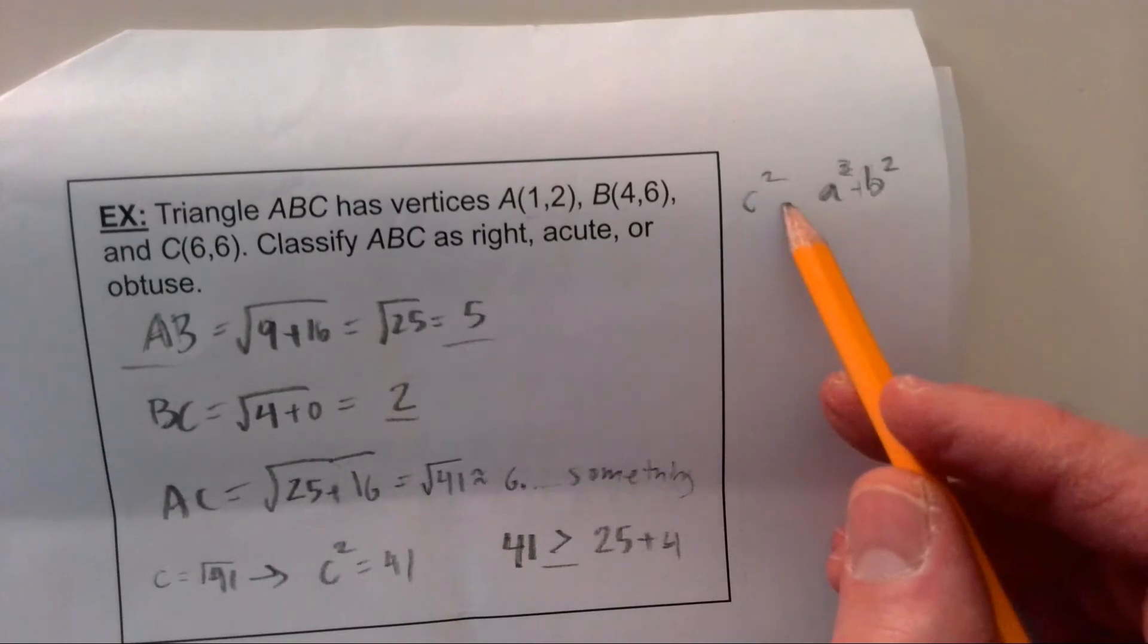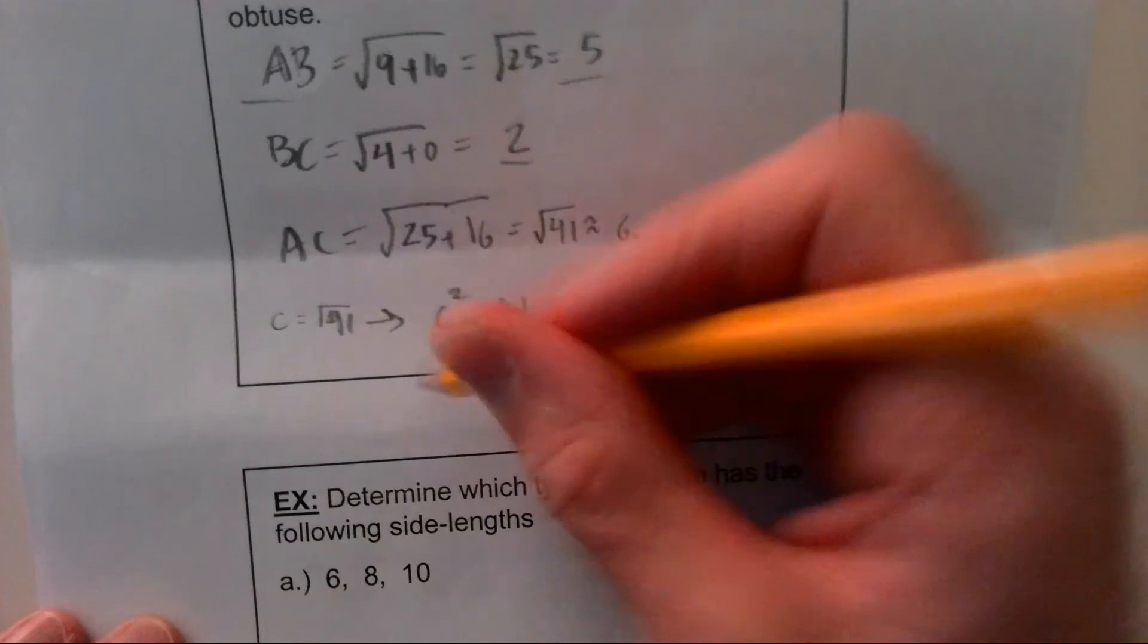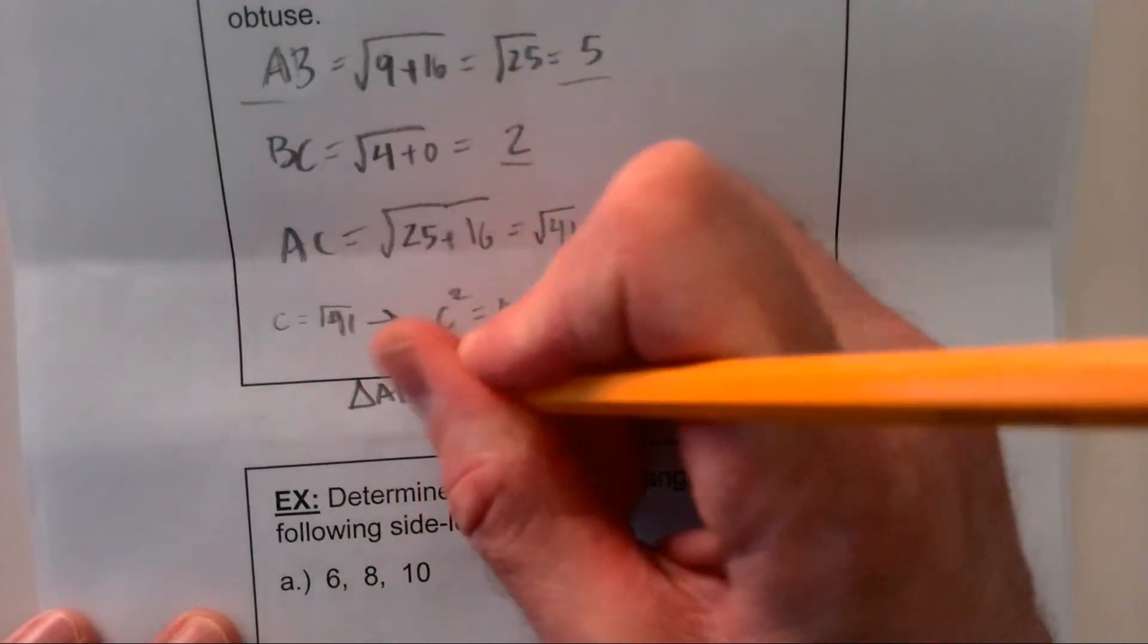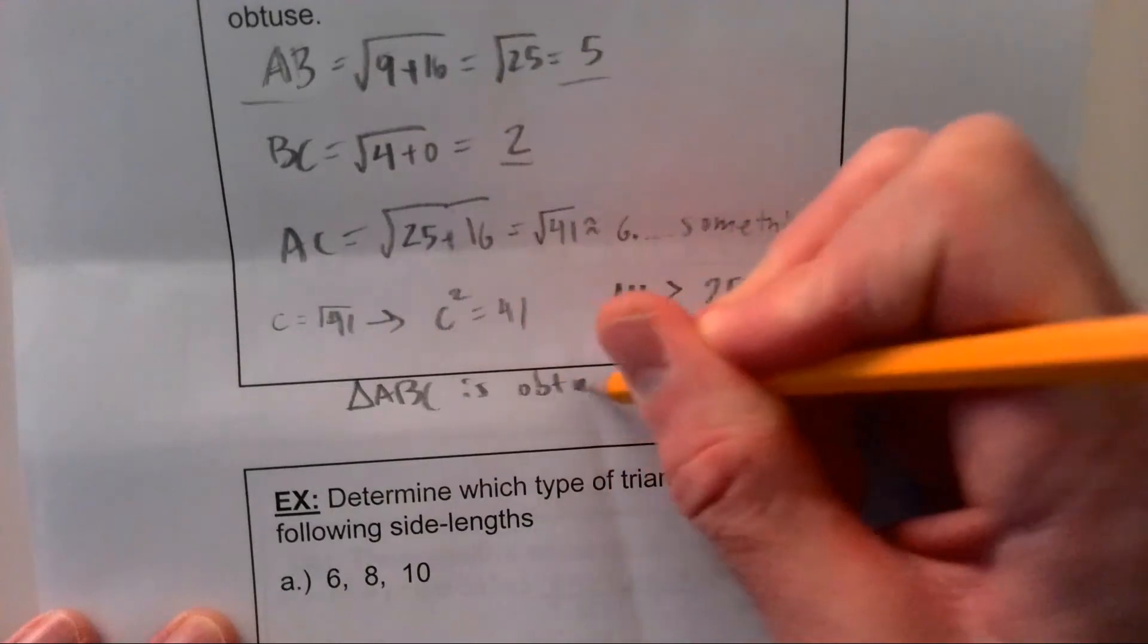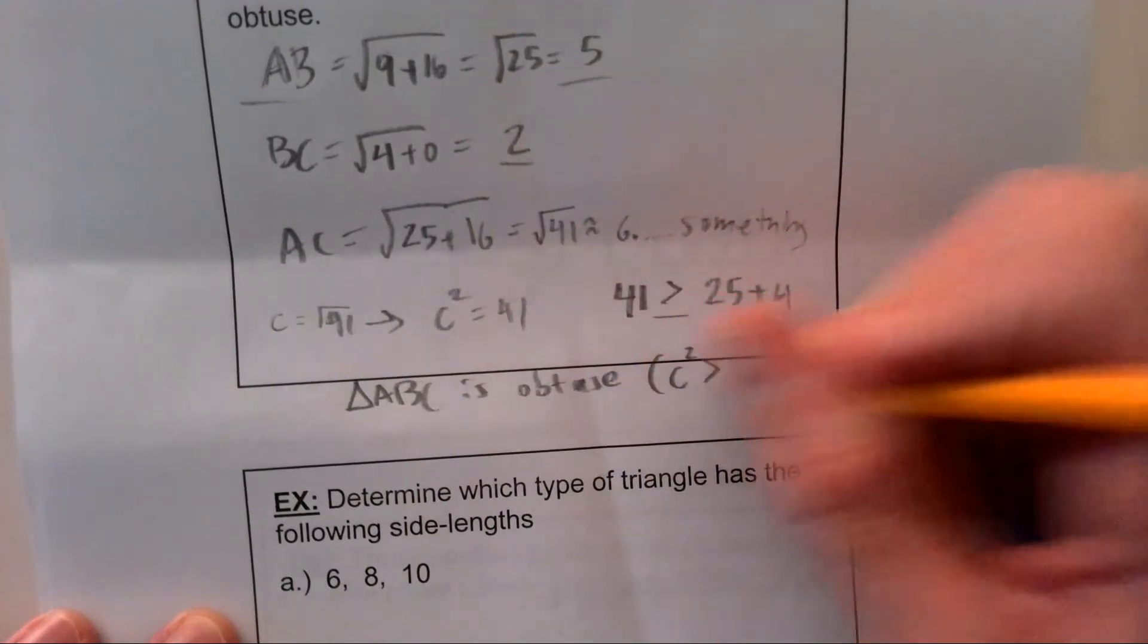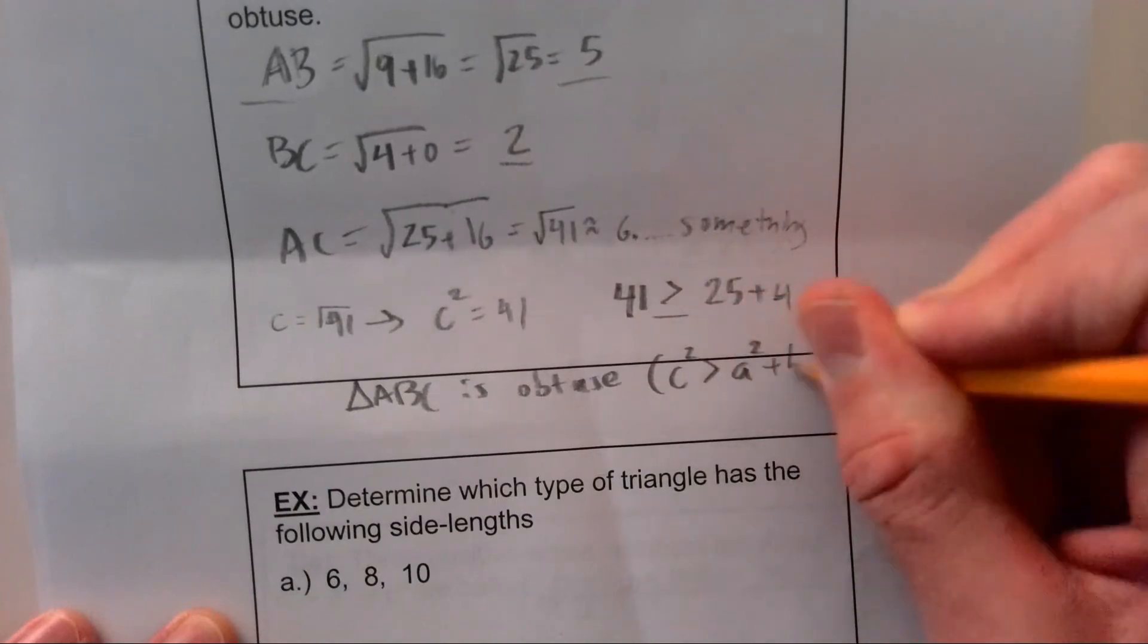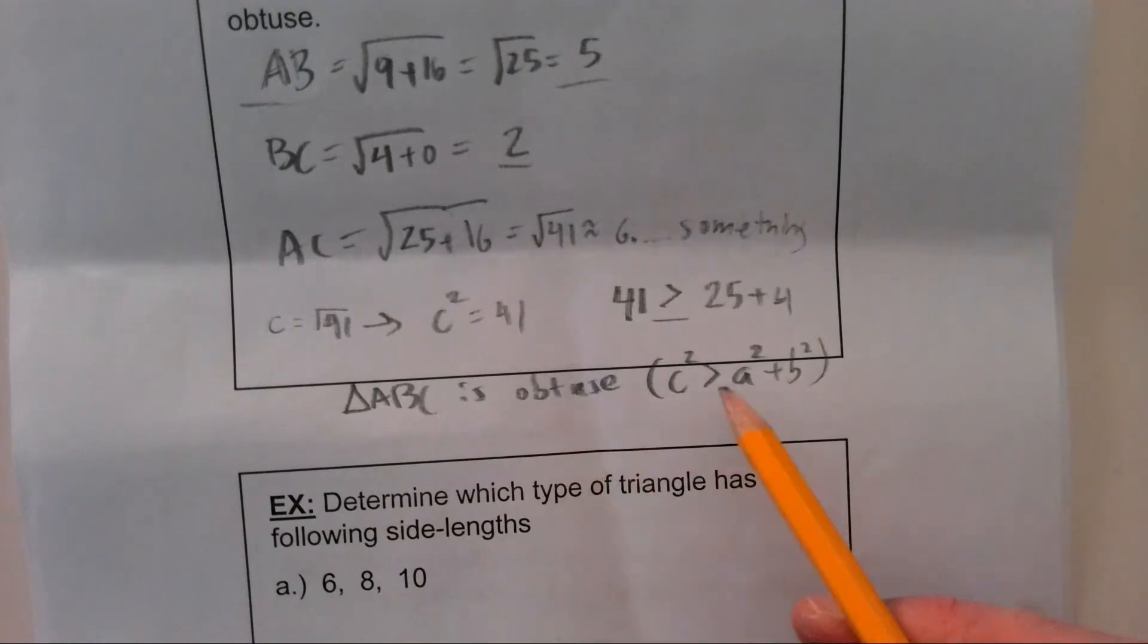Okay, so in other words, c squared is greater than a squared plus b squared. That's going to tell us that triangle ABC is obtuse. Why is it obtuse? Well, because c squared is greater than a squared plus b squared. Alright, so we've got our answer. We've justified it.